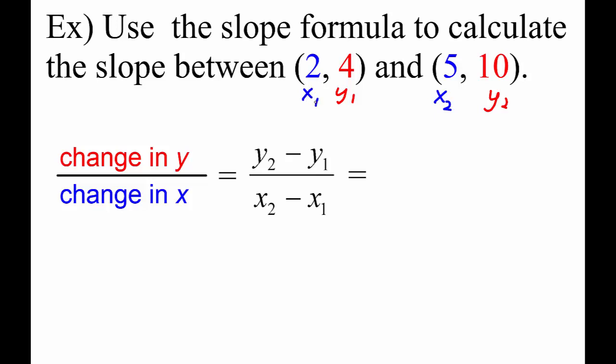Now we just substitute them into the formula. Second y minus the first y over the second x minus the first x. We simplify to get 6 over 3, and 6 divided by 3 equals 2.